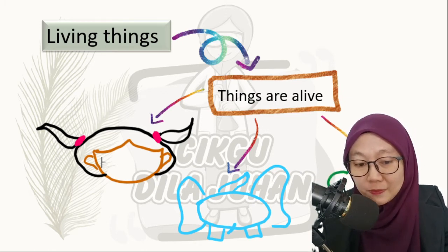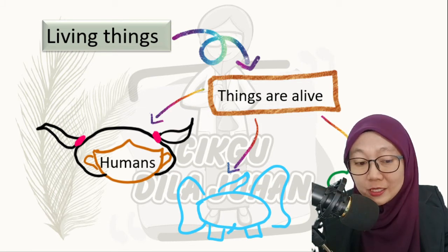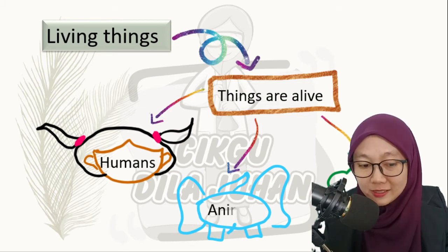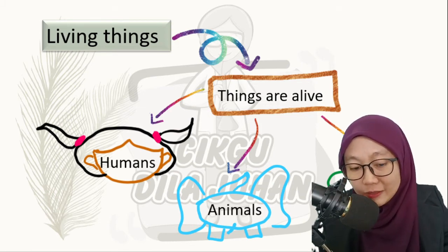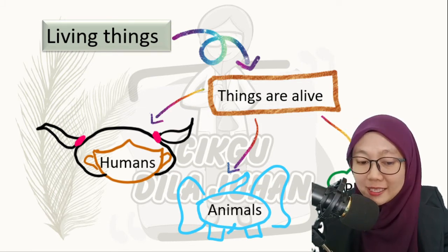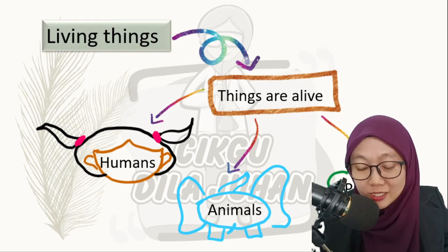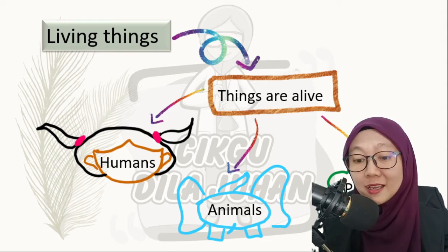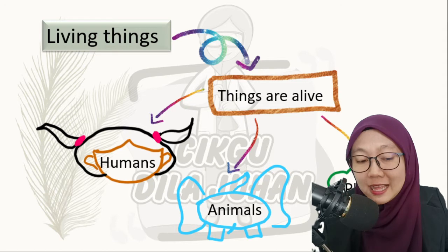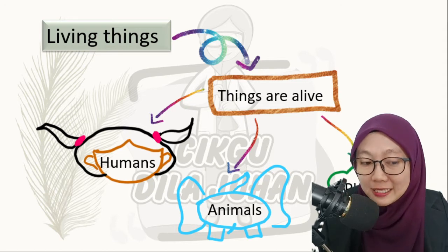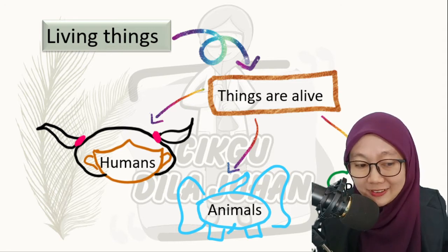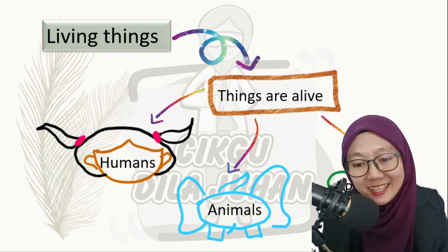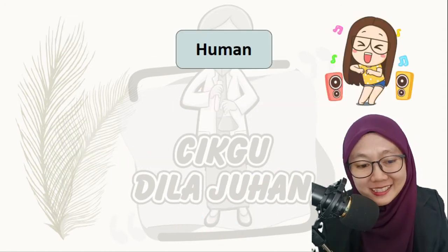The third one is a plant. So the first one is human, animals, and plants — and all of these three things are things that are alive. That means all of these are living things.